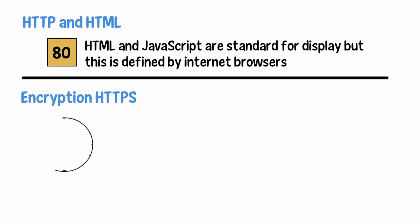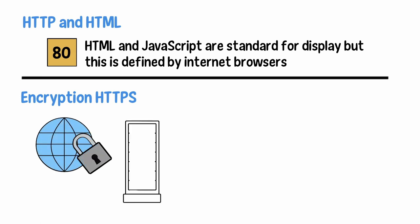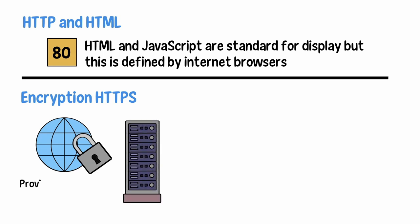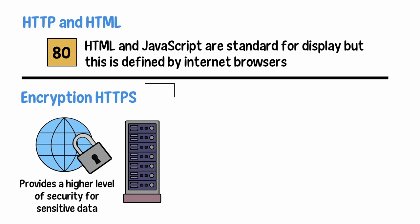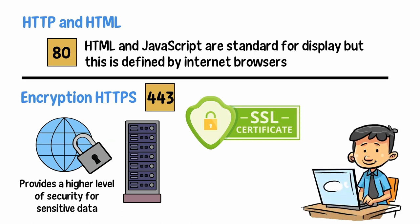Encryption and HTTPS. HTTPS adds encryption to data transfers from HTTP websites. The encryption code is provided by the server, and it provides a higher level of security for sensitive data. HTTPS is available on port 443. Encryption is provided by special SSL certificates, which website owners can purchase and encode.